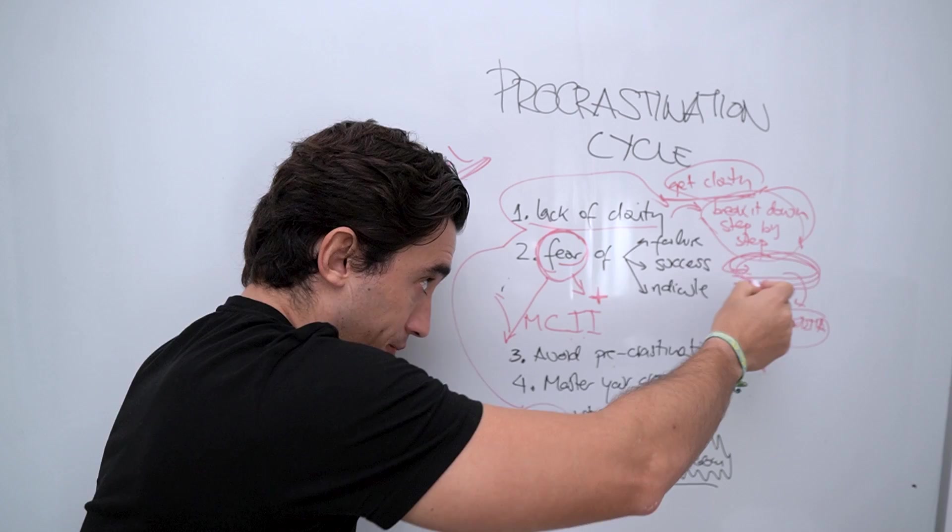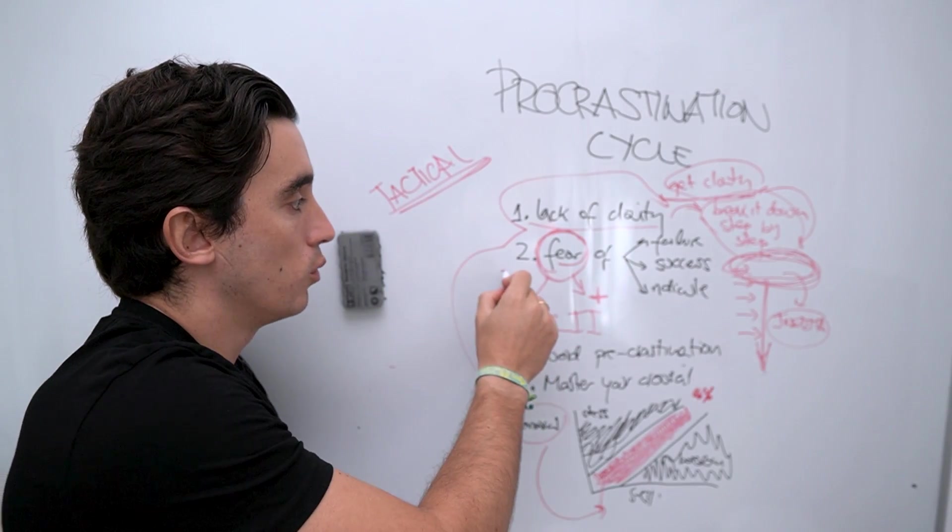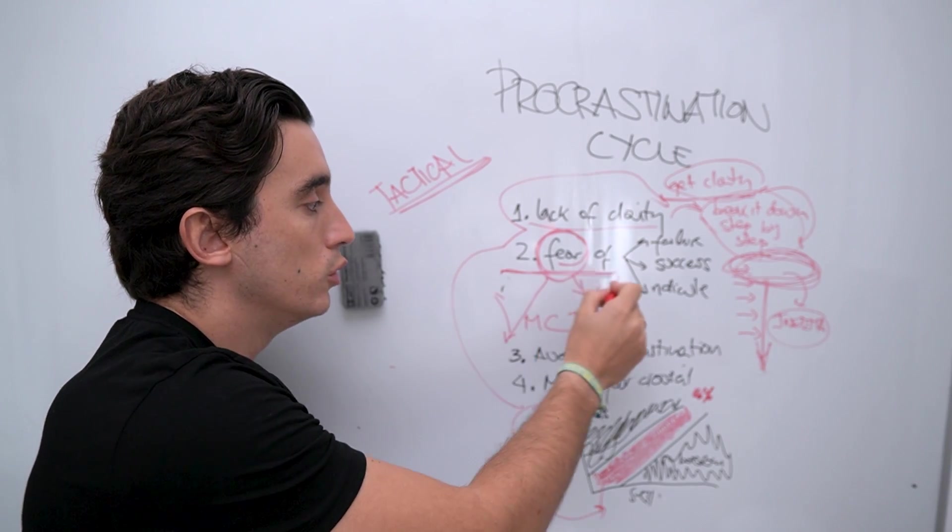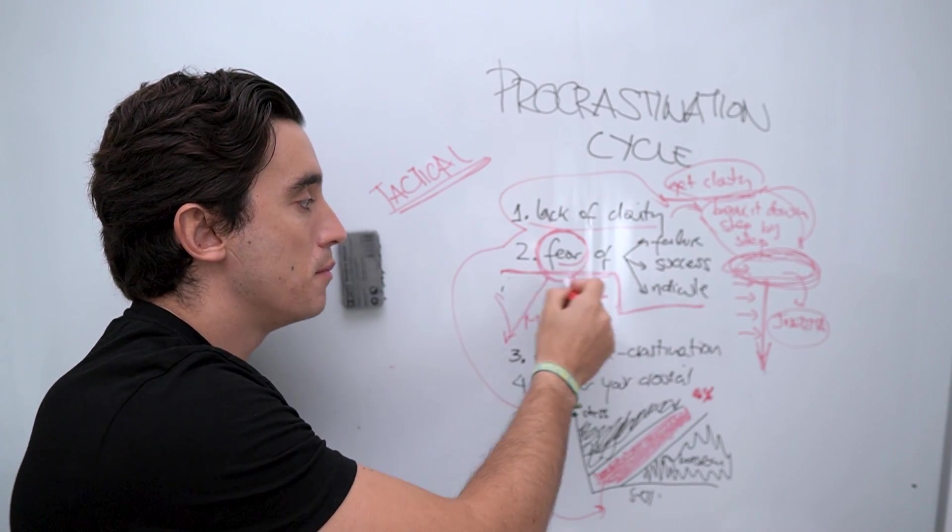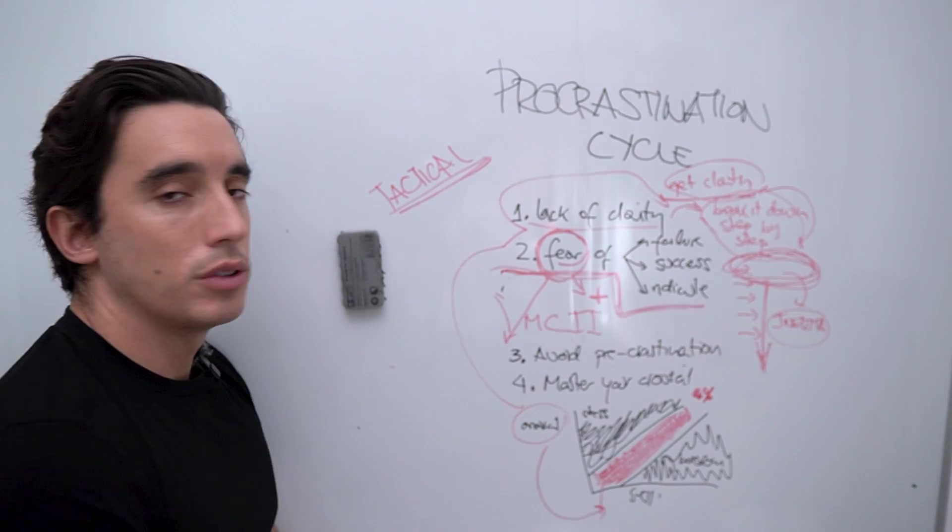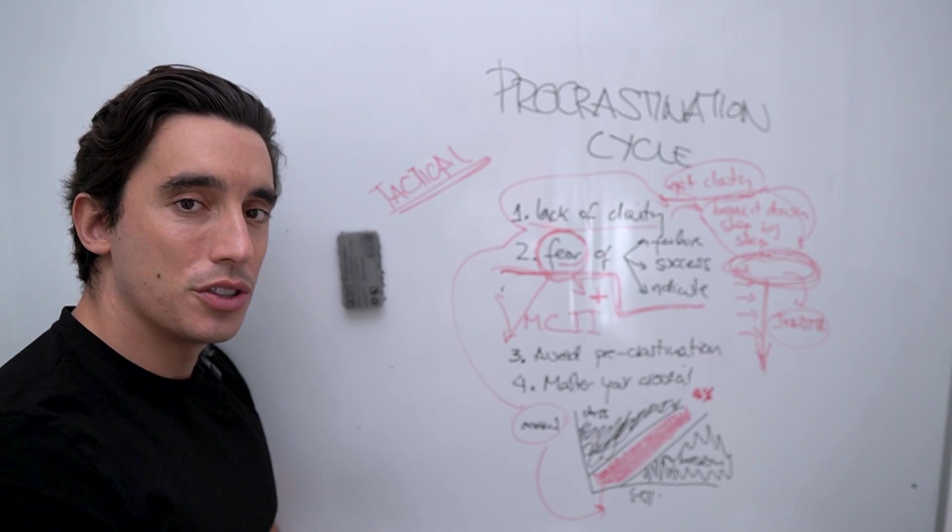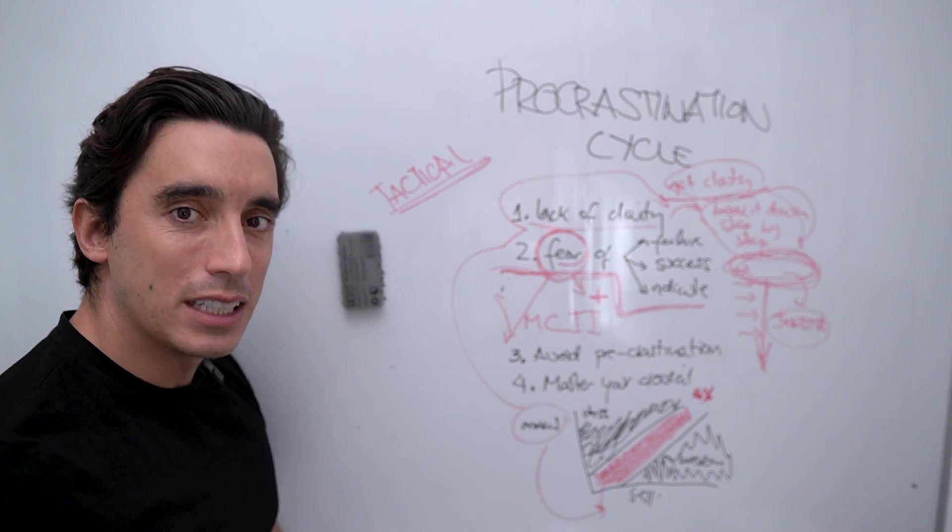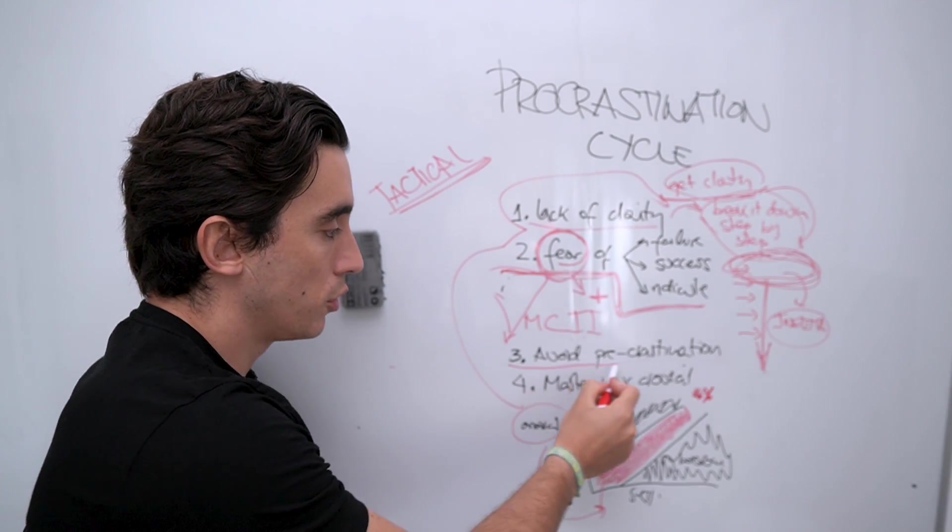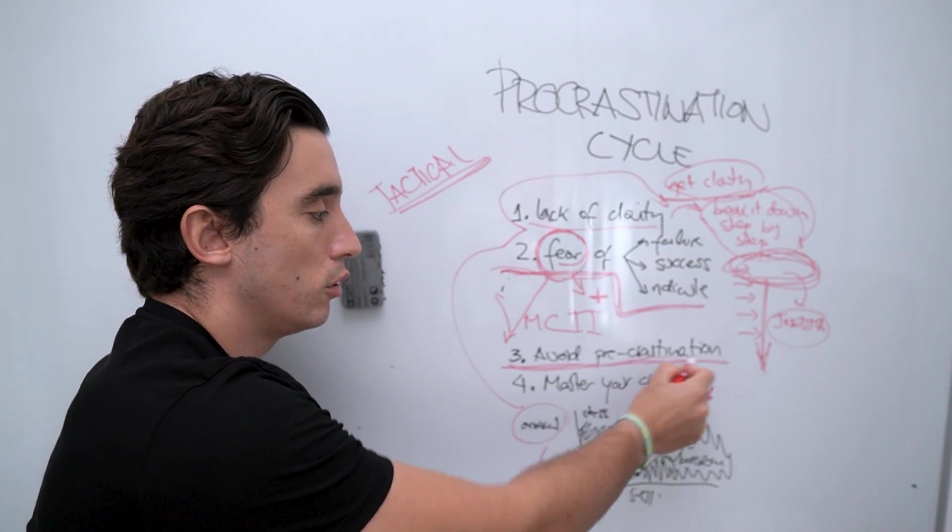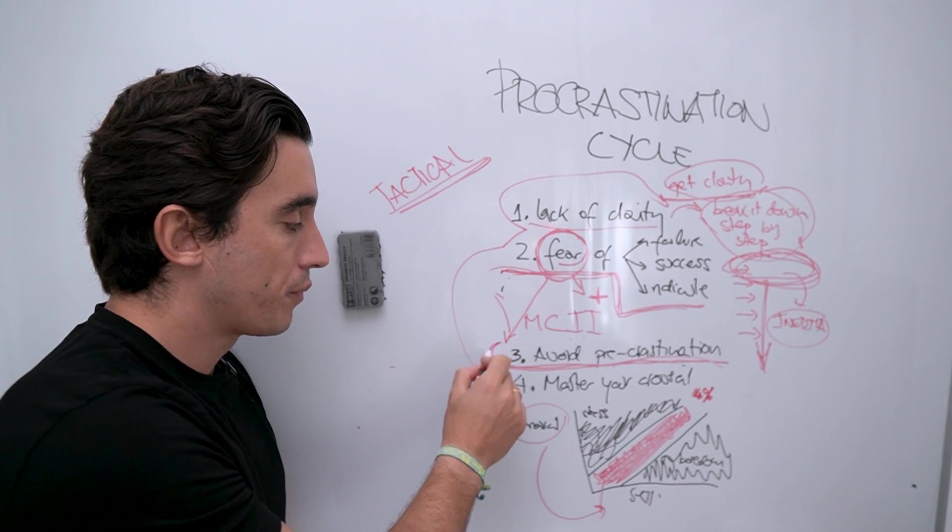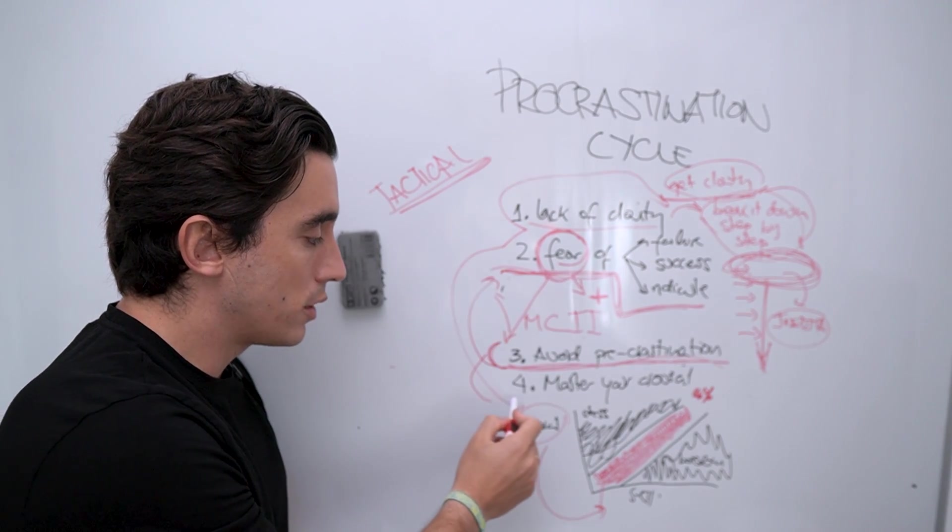Then the second one is you use MCII, mental contrasting with implementation intentions, to remove the fear that may be subconsciously preventing you from doing the task. This is a cognitive reframing strategy. You change the meaning associated with every single tiny little behavior that you need to deploy in order to achieve the task. Then you avoid procrastination, so you do not check your email, watch YouTube, or do all sorts of bullshit stuff that you know is not helping you move forward. Instead, what you do is that you recommit to the task. And finally, you master your arousal.